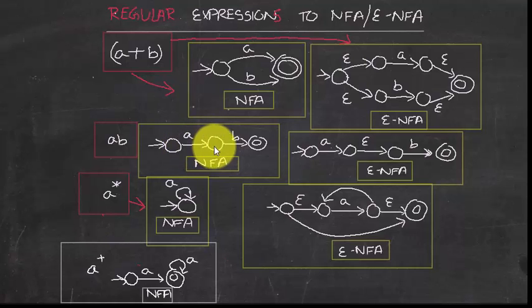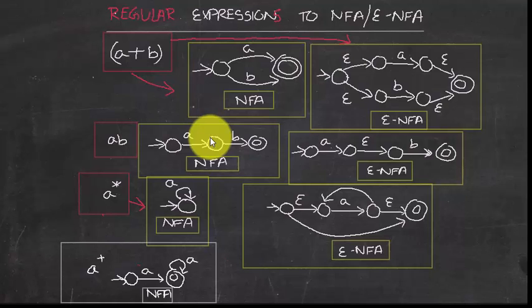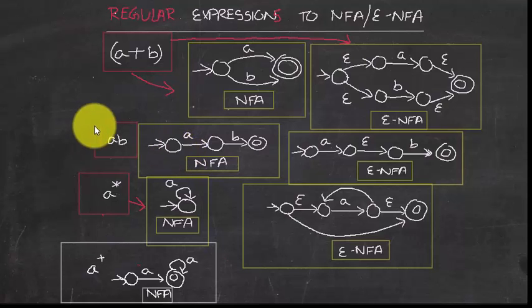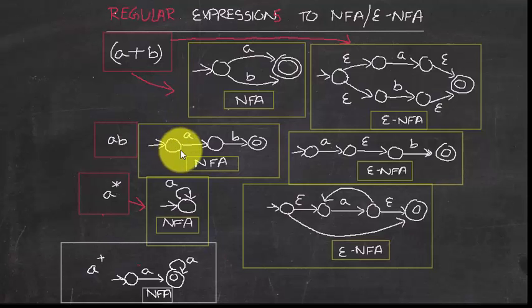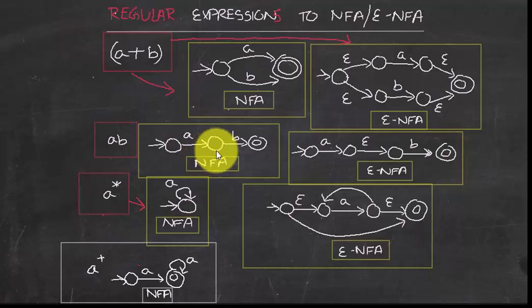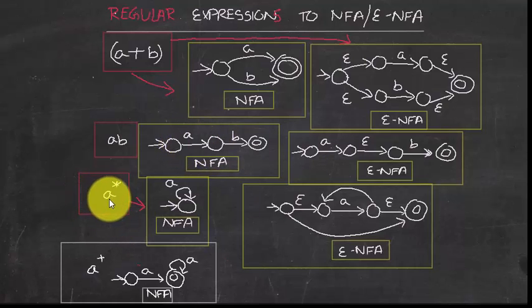Notice that in a DFA you would have to consider all possible inputs for every state, handling transitions for every alphabet symbol. Since this is an NFA, that is not required. For Kleene closure (a*), you stay in the same state and keep transitioning ambiguously, with possibly multiple outputs.